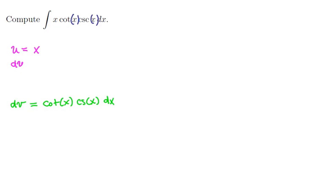Now let's differentiate. The derivative of u is going to be 1, or if we multiply through by a dx, we get du is 1 dx.